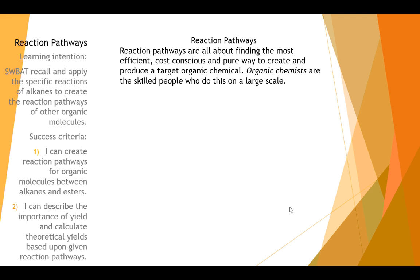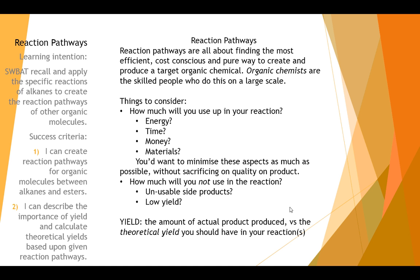So you've done your flow chart. Let's have a look at why we do these reaction pathways. Reaction pathways are all about finding the most efficient and cost-conscious and pure way to create or produce a target organic chemical. And organic chemists are people who are employed by businesses to do this on a large scale. Think of scientists or organic chemists who work for a pharmaceutical company who make Panadol for you, or organic chemists who make Coca-Cola for you, or synthesize and produce and fraction petroleum for you. People do this, and they have to look at the reaction pathways of their reactants, and make sure that they can do everything in the best way possible.